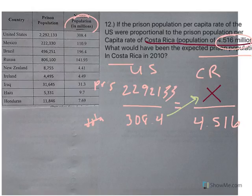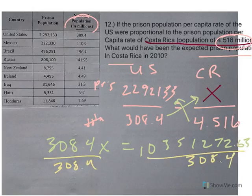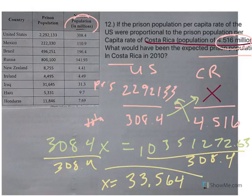So I can cross multiply. 308.4x equals 10,351,272.63. Divide both sides by the number in front of x, which is 308.4. And if my math is correct, you should end up with 33,564. That's the prison population of Costa Rica if they were proportional to that of the U.S.